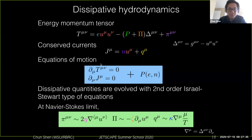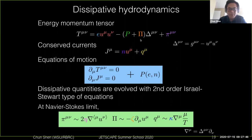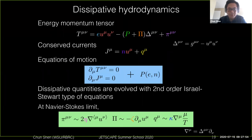Together, we want to solve these equations with the equation of state, and these close the equations for the equilibrium variables by energy density and flow velocities. We need additional equations to describe the evolution of the shear and bulk stress tensors, and these are solved by so-called second-order Israel-Stewart type equations.